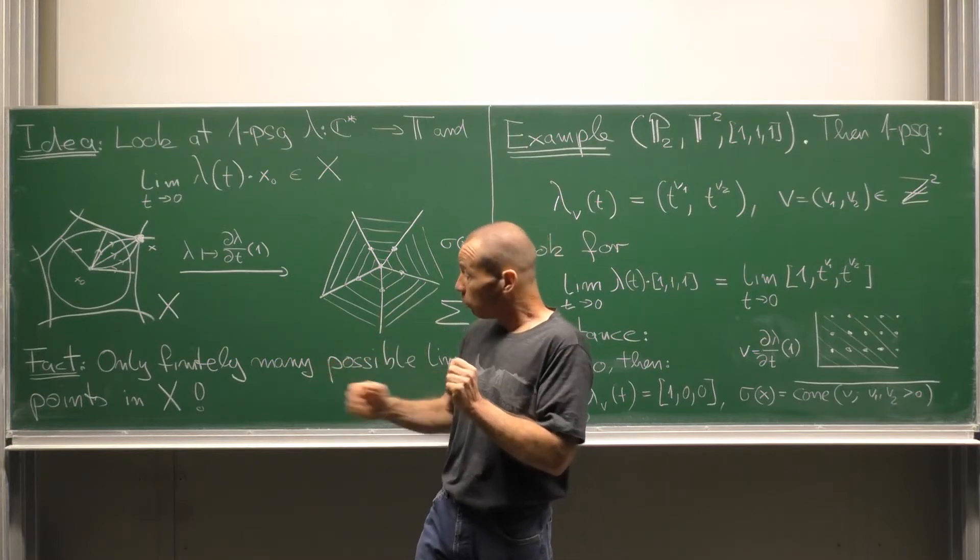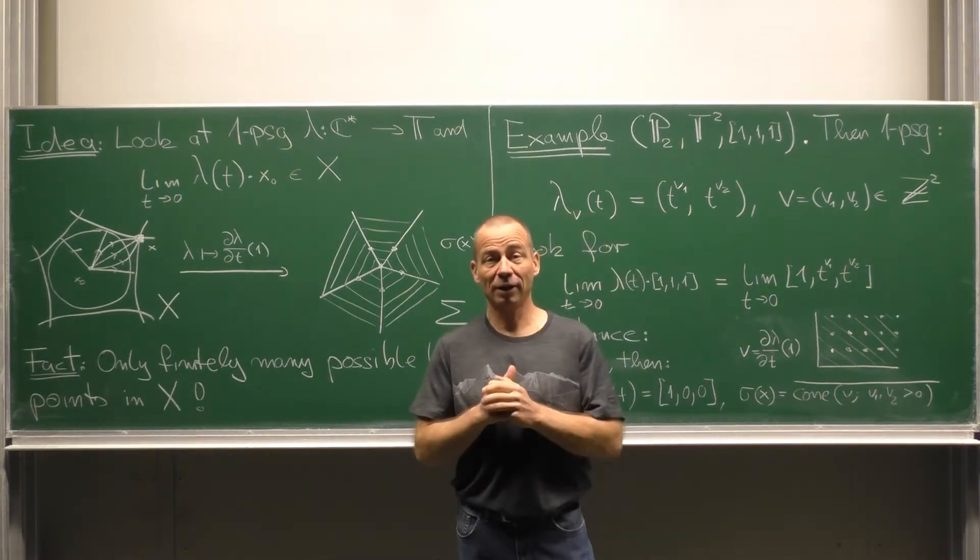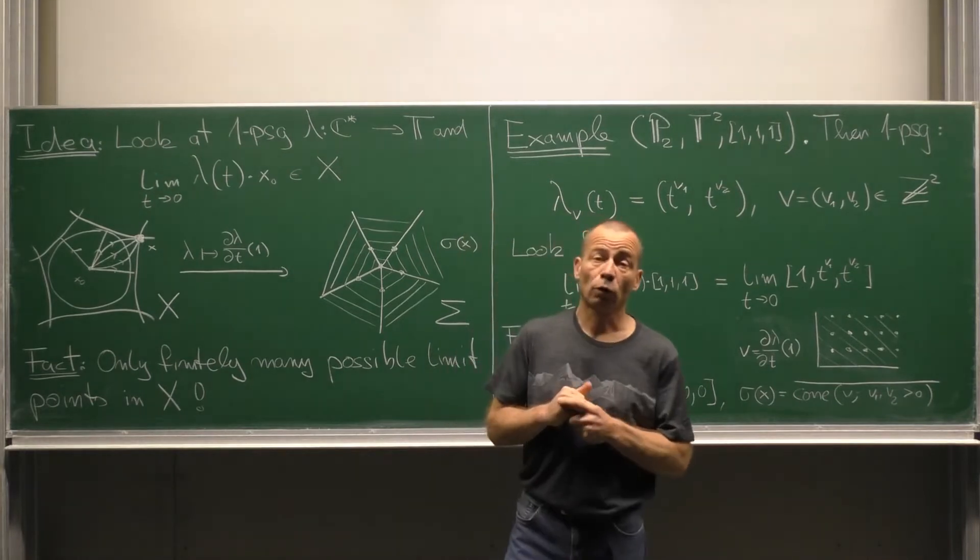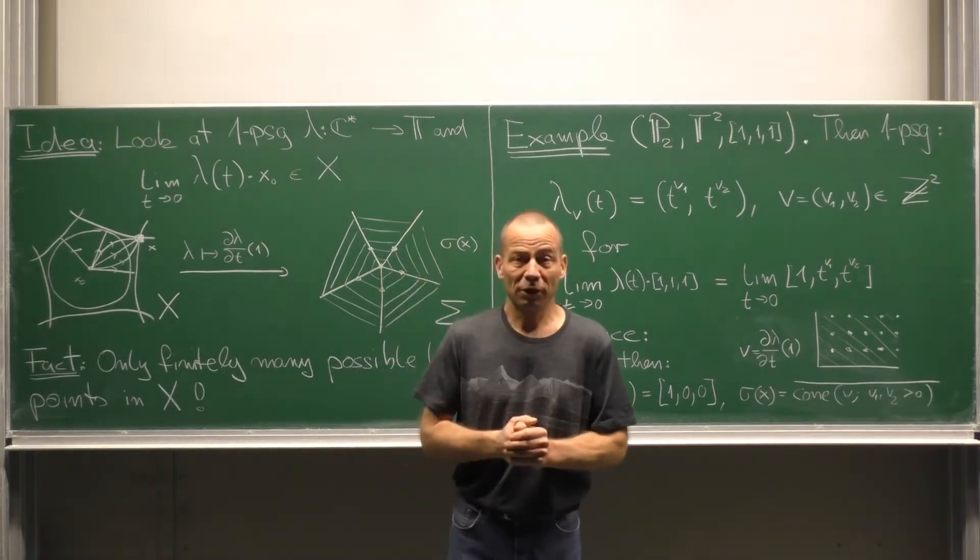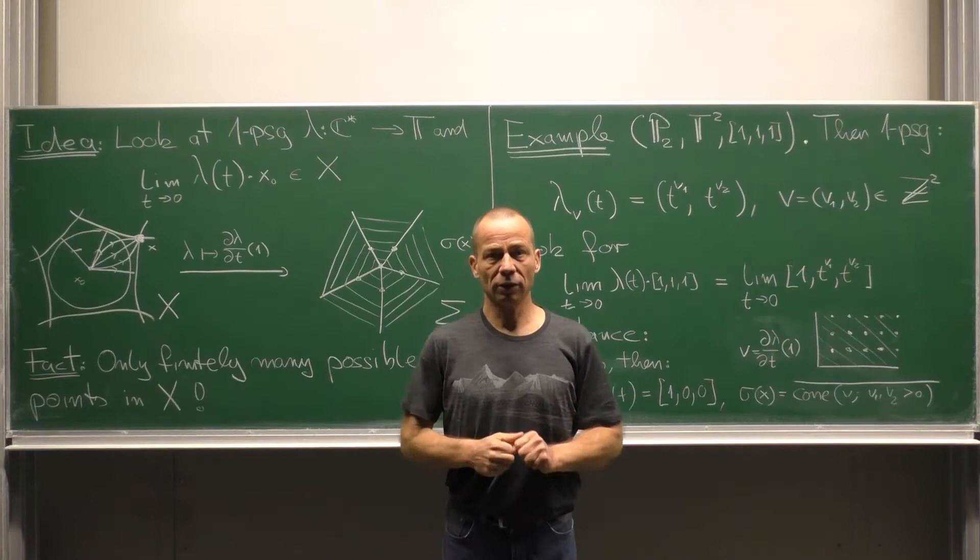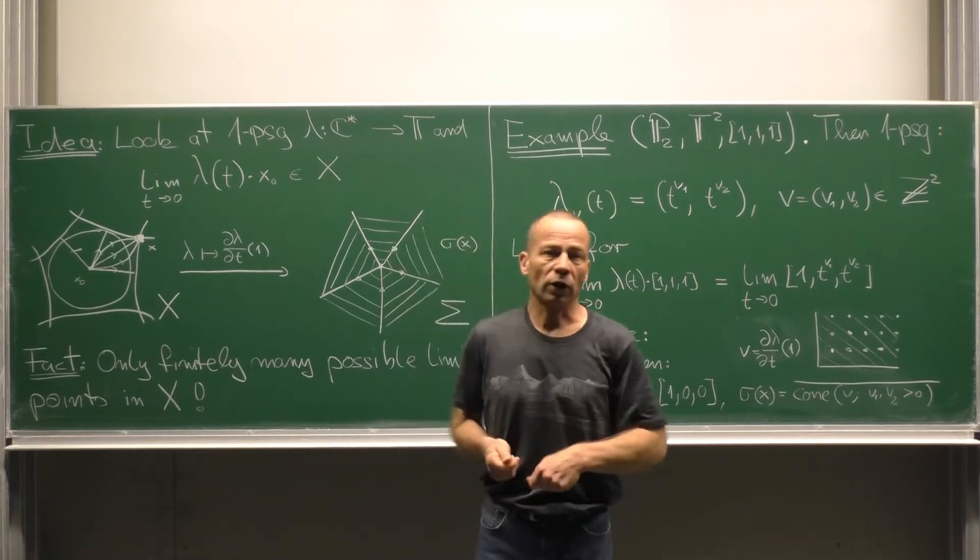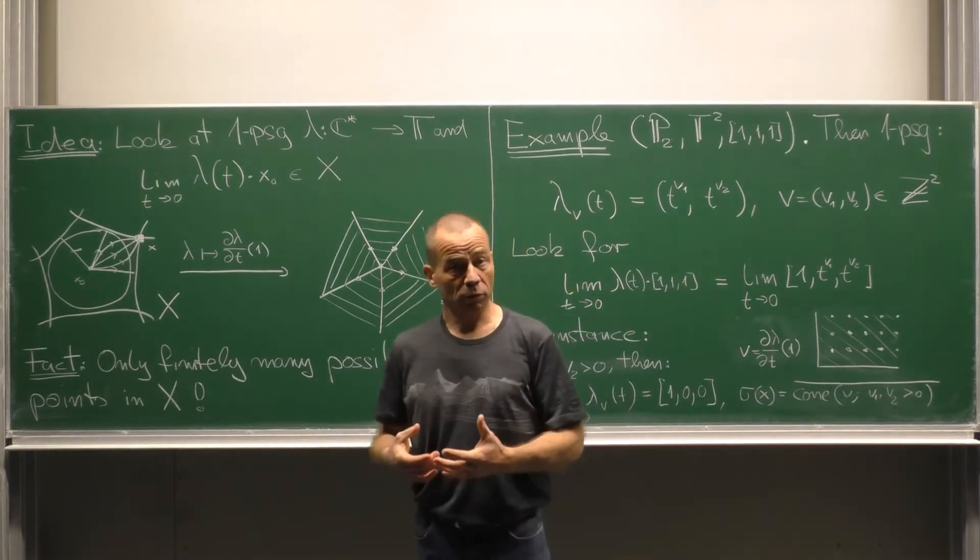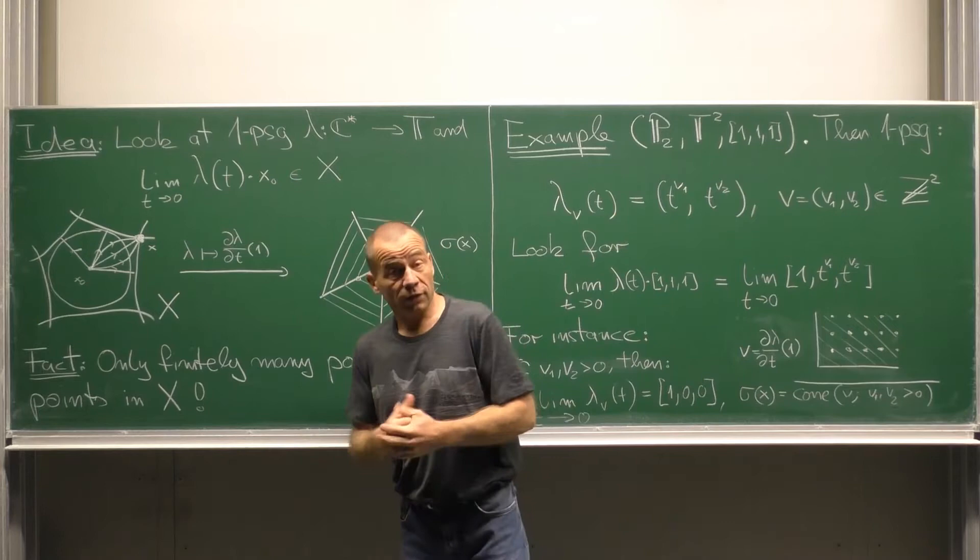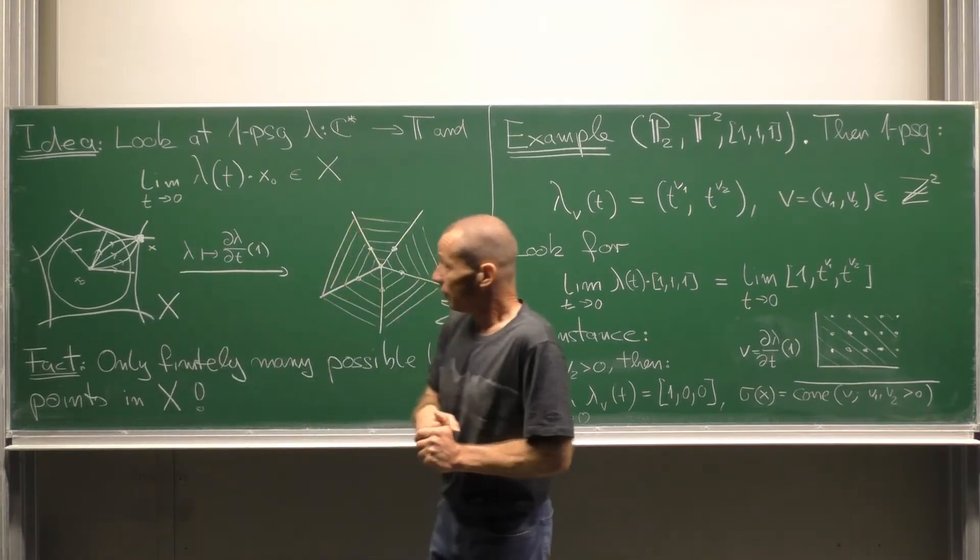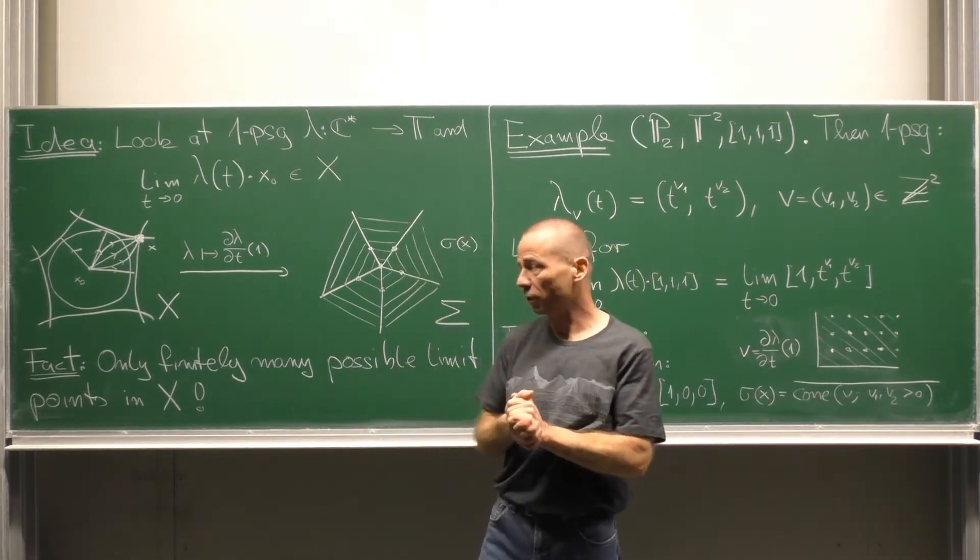Now it is an important fact that there are only finitely many such limit points for a toric variety. That means that our infinitely many one parameter subgroups are attracted by a finite number of points. It turns out that there will be points attracting only a few lambda. There will be points attracting a lot of them.